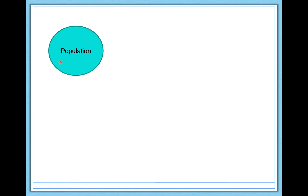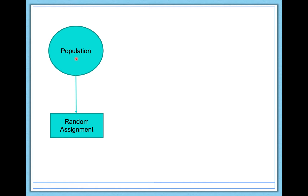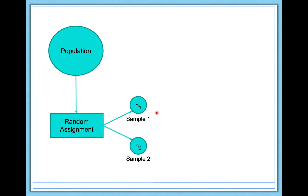Here's the situation we're looking at. You have a population to draw from — always the first step. From there, you collect a random sample of, say, 100 people, then randomly assign those 100 people to one of two different groups: sample one and sample two. Sample one could be the group who work out in classes, of size N1 — maybe 50 people — and sample two of size N2 are people who work out alone, another 50 people.